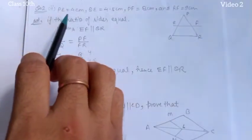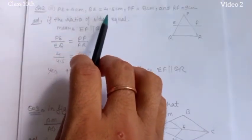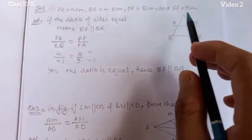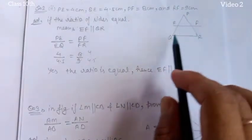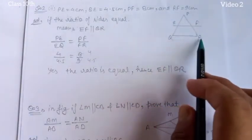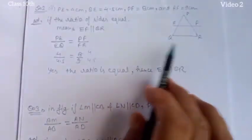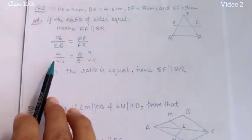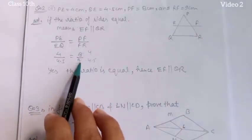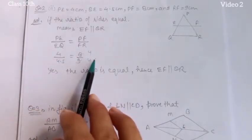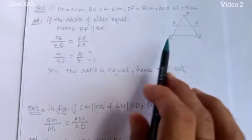Now the second part of question number 2: PE is 4 cm, QE is 4.5 cm, PF is 8 cm, and RF is 9 cm. We have to check if EF is parallel to QR by checking whether PE/EQ equals PF/FR. Replacing the values: 4 upon 4.5 and 8 upon 9. Both simplify to 4 upon 4.5, so left-hand side equals right-hand side. Hence the ratio is equal, which means EF is parallel to QR.